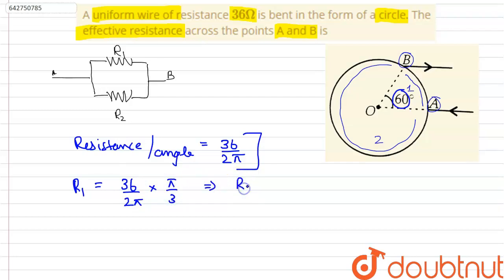This comes out to be R1 is equal to 6 ohms. Therefore, value of R2 is equal to 36 minus 6 which gives us R2 is equal to 30 ohms.